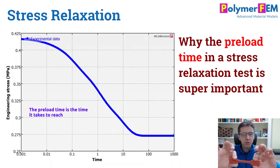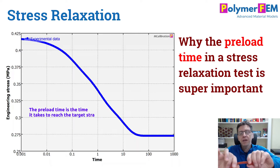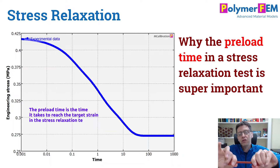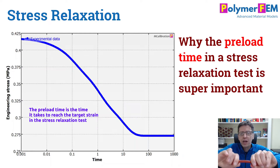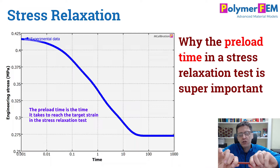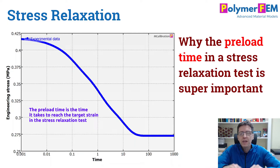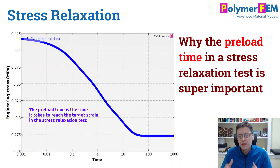In stress relaxation, I have a specimen here. I pull on it to a certain strain, then I hold the strain constant, and then I measure how the stress relaxes. My question is: how important is it to know exactly how fast I loaded this specimen to that final strain before starting to measure the relaxation? Is that something that's important for the calibration?